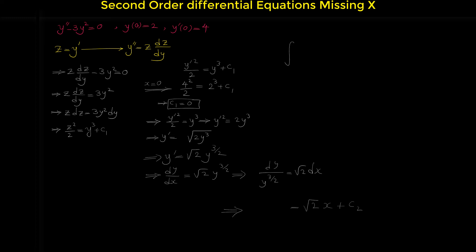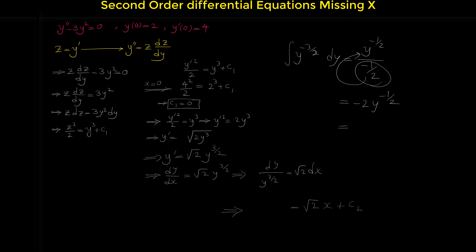The integral of square root of 2 dx is square root of 2 times x plus a constant c2. For the integral of dy over y to the 3/2, we bring y to the 3/2 to the numerator and use the power rule: this gives y to the negative 1/2 over negative 1/2, which equals negative 2y to the negative 1/2, or negative 2 over square root of y.